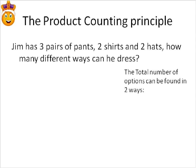The other counting principle is known as the product counting principle. This one works with questions like: if Jim has three pairs of pants, two shirts, and two hats, how many different ways can he dress? This type of question is a little different. We can't just add them together, because Jim could take one pair of pants with a different shirt and a different hat, and there'd be all sorts of different options.